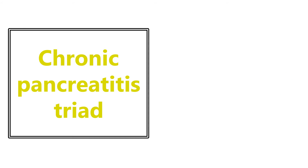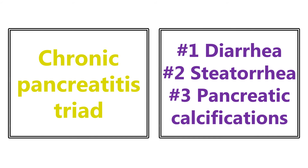The chronic pancreatitis triad is diarrhea, steatorrhea — fatty fecal matter that floats in the toilet — and pancreatic calcifications. Remember, in chronic pancreatitis the patient may not even have an elevated lipase, so do not rely on that. These are the three findings you will see, and the pancreatic calcifications are typically visible on CT scan.